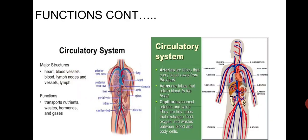Another picture is showing the circulatory system. Arteries are tubes that carry blood away from the heart. Veins are tubes that return blood to the heart. Capillaries connect arteries and veins. They are tiny tubes that exchange food, oxygen, and waste between blood and the body cells.